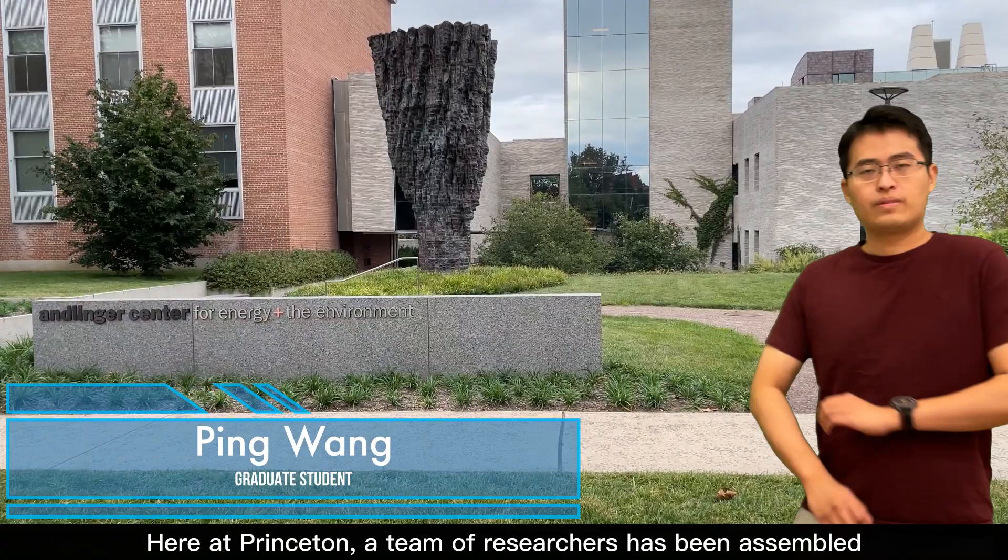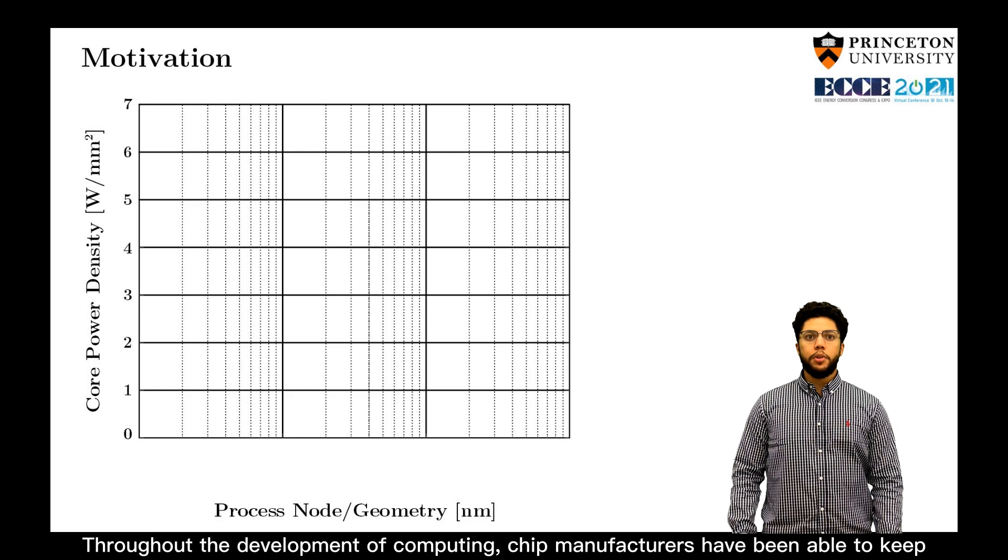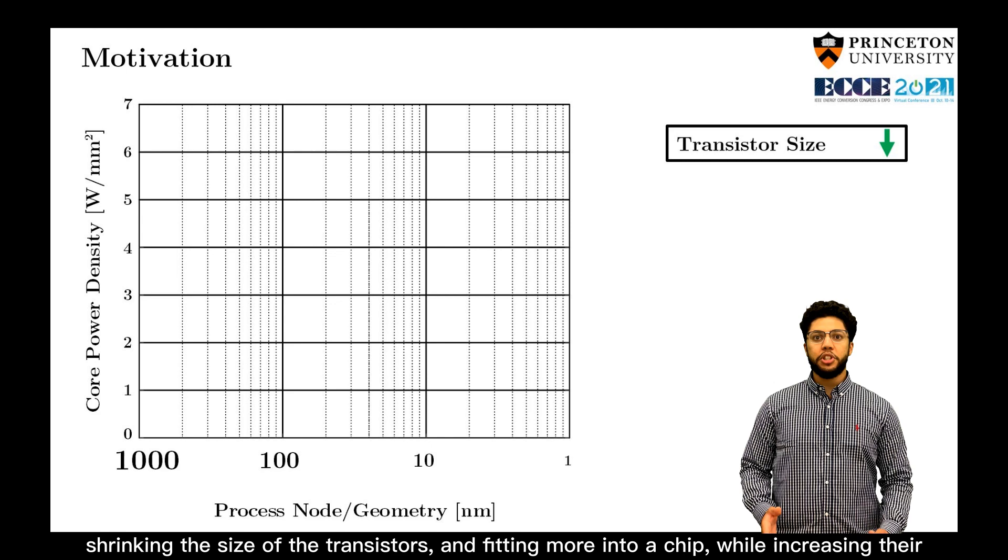Here at Princeton, a team of researchers has been assembled to rethink the way we power microprocessors. Throughout the development of computing, chip manufacturers have been able to keep shrinking the size of transistors and fitting more into a chip while increasing their speeds and decreasing their operating voltage.